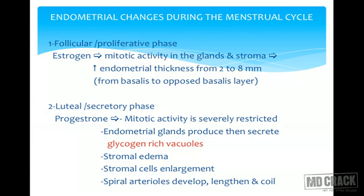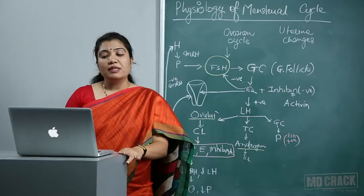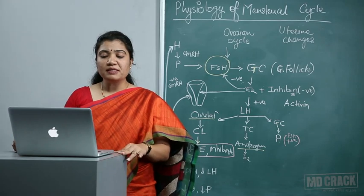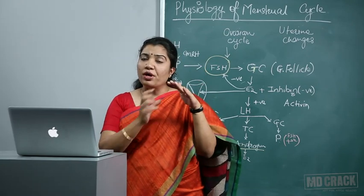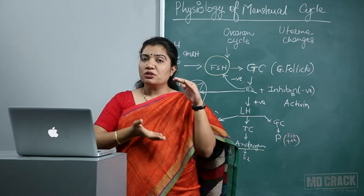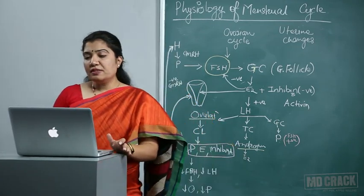In the luteal or secretory phase, progesterone acts on the endometrium, severely restricting mitotic activity. Endometrial glands produce and secrete glycogen-rich vacuoles — this vacuole formation is the first sign of ovulation, an important MCQ. Then stromal edema and stromal cell enlargement take place. Spiral arterioles develop in the proliferative endometrium, lengthen, and then coil because the growth is so extensive that coiling occurs — forming spiral arterioles.